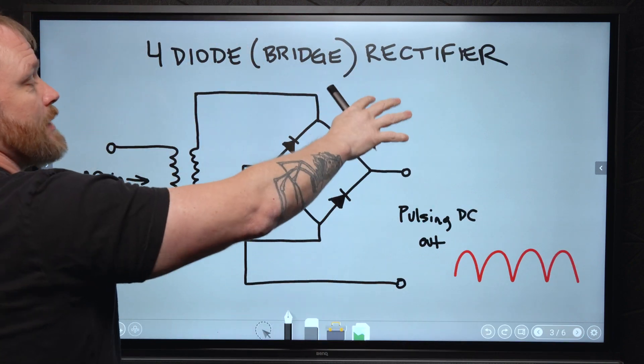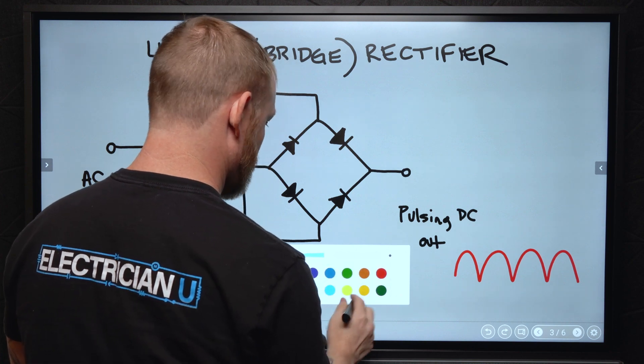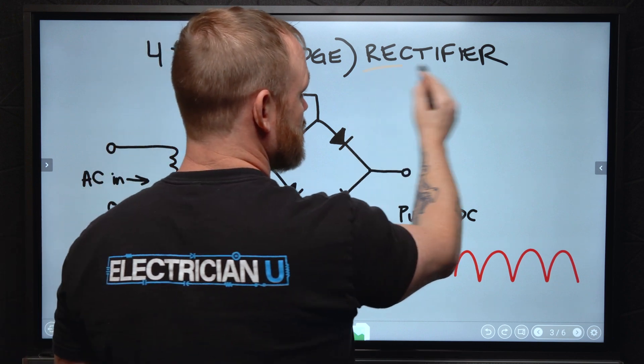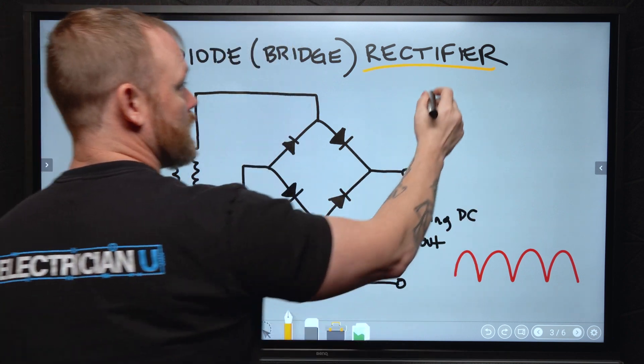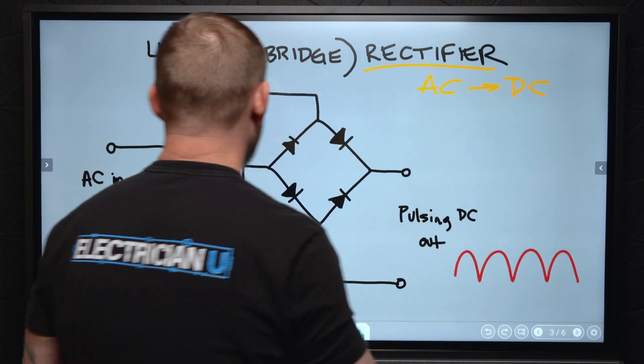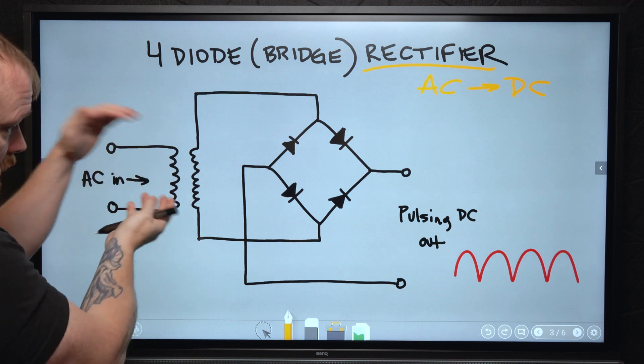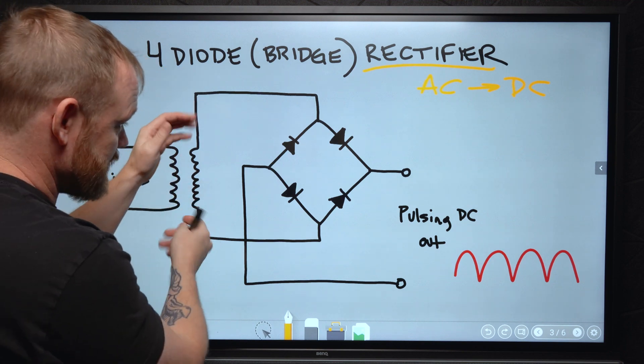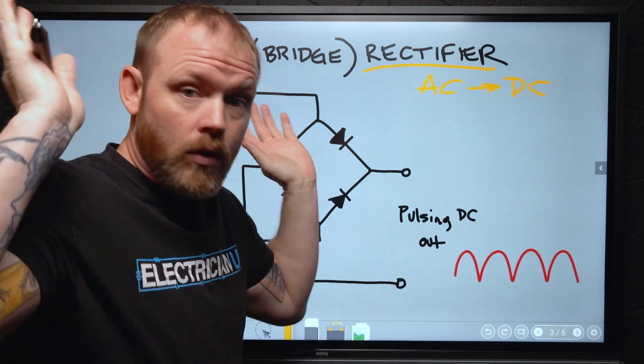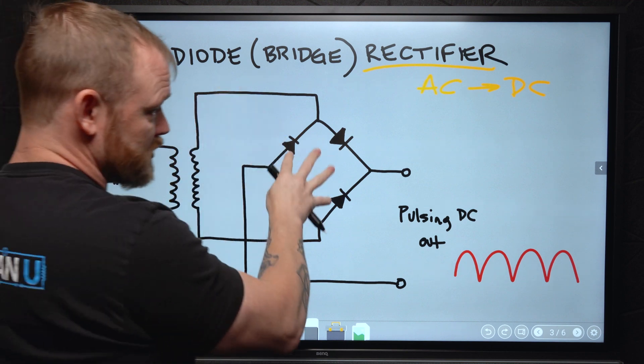So if we look, the first example is through rectification. We're going to be using a four diode rectifier or what we call a bridge rectifier. So we are taking AC and going to DC. We've got an expanding and collapsing magnetic field in our primary, so that allows AC to induce current into our secondary, just like a normal transformer. But what we hook up to it is this bridge rectifier.